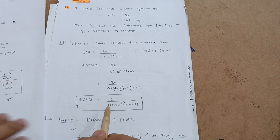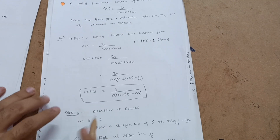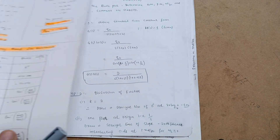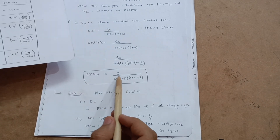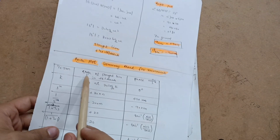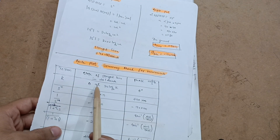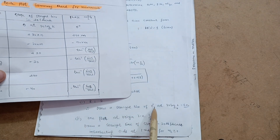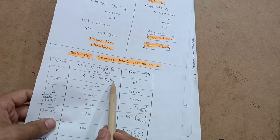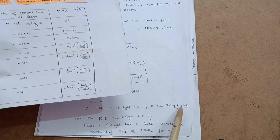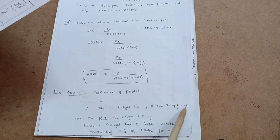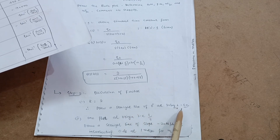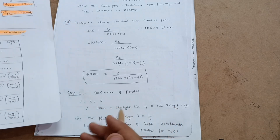This completes Step 1. Step 2 is discussion of factors. For K: K = 2, so 20·log(K) = 20·log(2) = 6.02 dB. Draw a straight horizontal line at 6.02 dB; phase angle is 0 degrees. When I draw the Bode plot graph, I'll show you what this 6.02 means. You need to remember these steps for the examination.